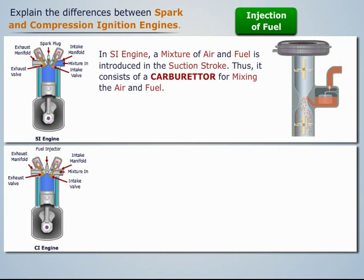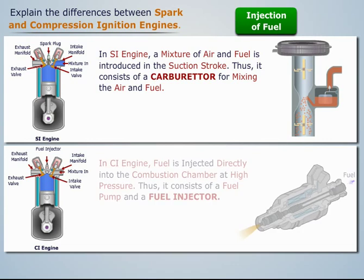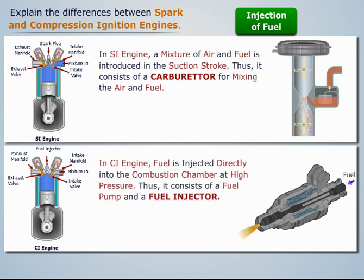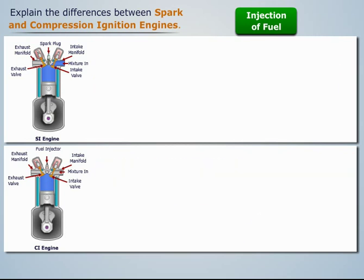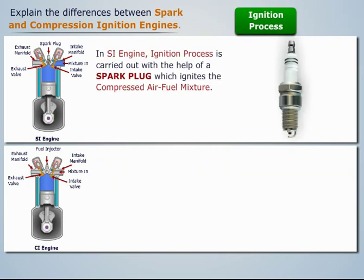In the spark ignition engine, a mixture of air and fuel is introduced in the suction stroke; thus it consists of a carburetor for mixing the air and fuel. Whereas, in the compression ignition engine, fuel is injected directly into the combustion chamber at high pressure; thus it consists of a fuel pump and a fuel injector.